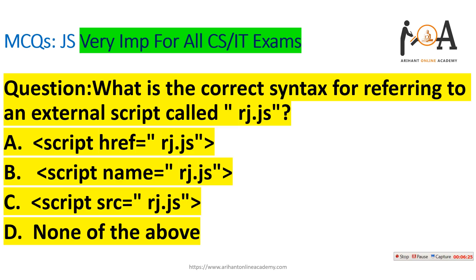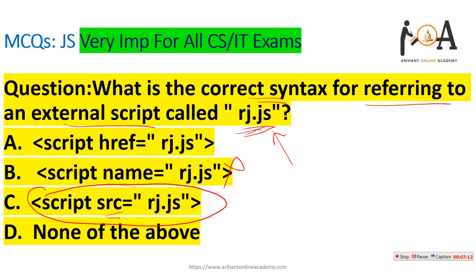The next question asks for the correct syntax for referring to an external script called rj.js. To refer to an external script, the correct syntax is: script src="rj.js" — using the src attribute. So the answer is script src equals rj.js, which is the right answer.